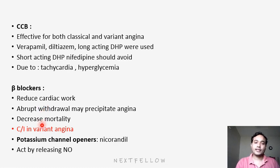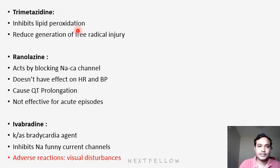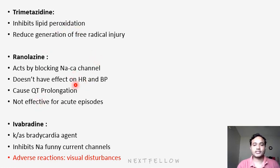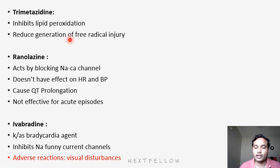Next is potassium channel openers — the example is nicorandil. They enhance vasodilation by releasing nitric oxide. Next, trimetazidine is a recently newly FDA-approved drug for angina pectoris. It inhibits lipid peroxidation and reduces generation of free radical injury, thereby reducing myocardial infarction size. In myocardial infarction, lipid deposition and free radical injury cause tissue damage, which trimetazidine can help prevent.